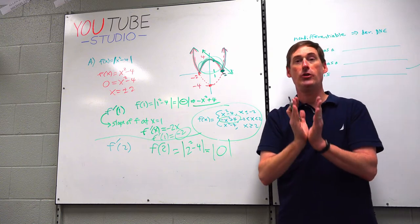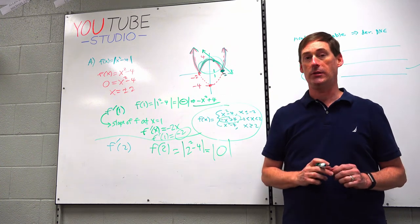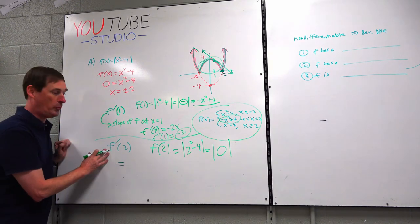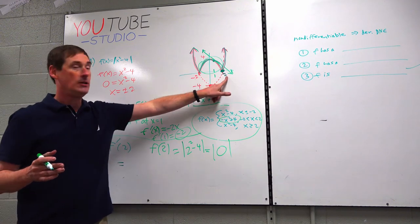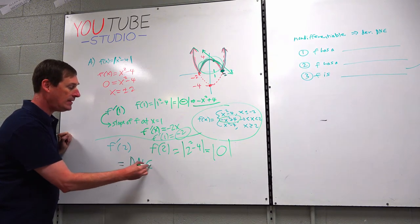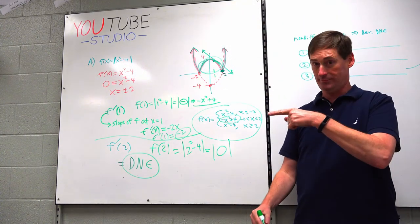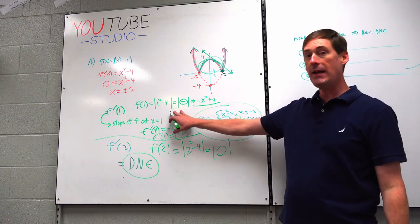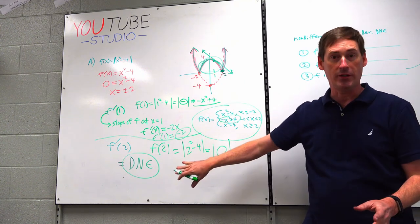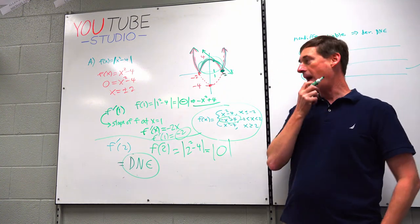You can't take the derivative or find a slope of a sharp corner in calculus — it is impossible. F prime of 2: what is the slope at X equals 2? You have to know the picture, see the sharp corner, and say: DNE, does not exist. The derivative and slope will never exist at a sharp corner. So: if it's negative, switch and take the derivative. If it's positive, keep it and take the derivative. If it's 0, you're at a corner — does not exist.